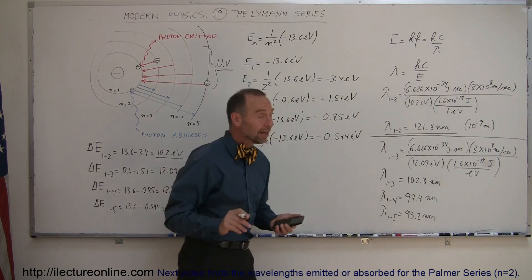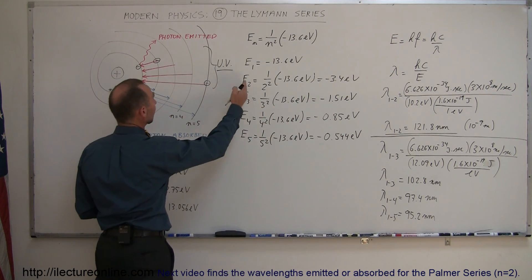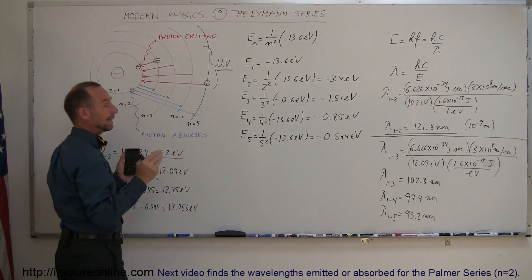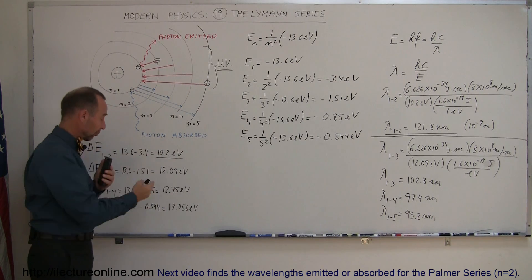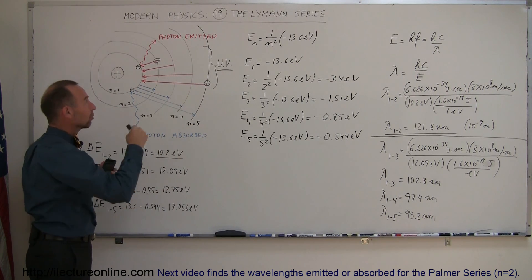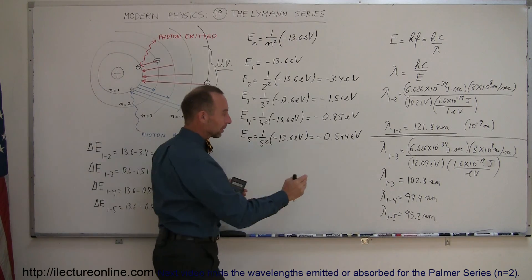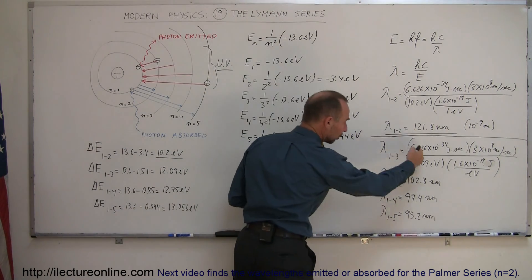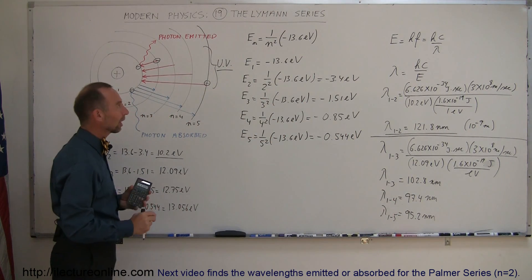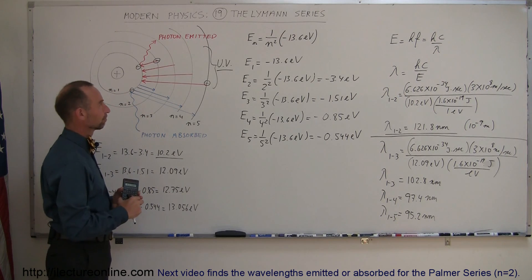As you can see, any time an electron jumps from a higher and higher orbit all the way down to the first orbit, the energy difference is greater, therefore the energy emitted is greater, and the wavelength of the photon becomes smaller — but all of those wavelengths fall within the UV radiation band. That's the Lyman series of jumps. Thank you.